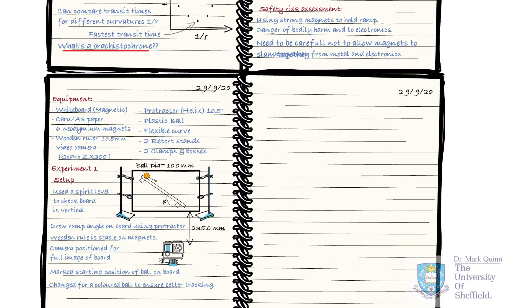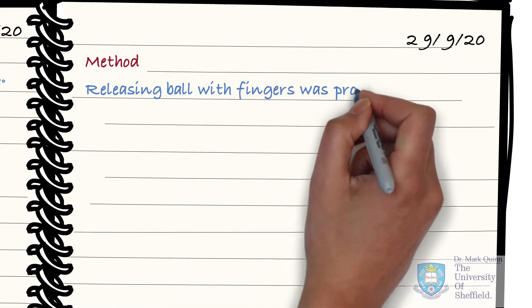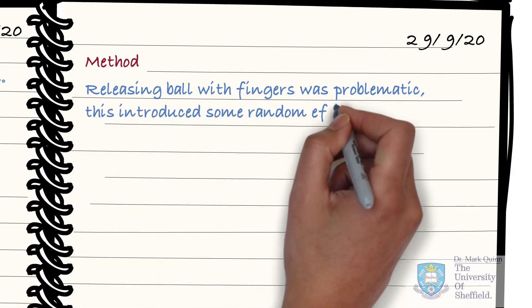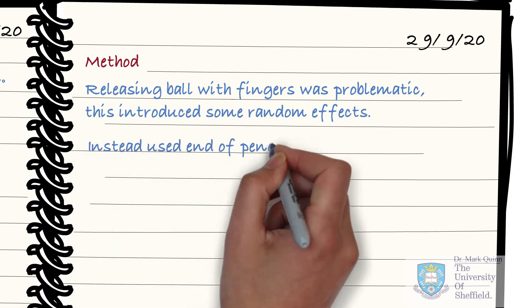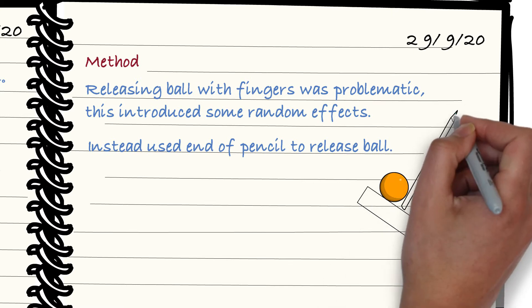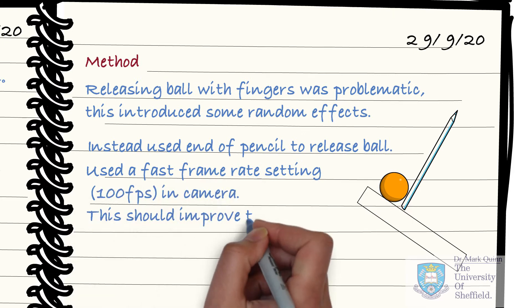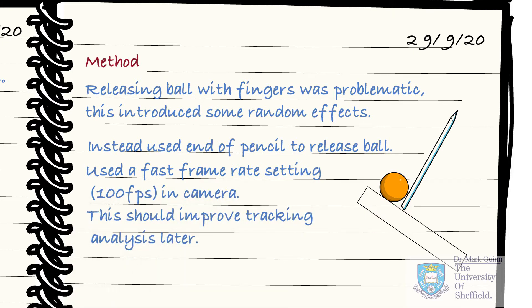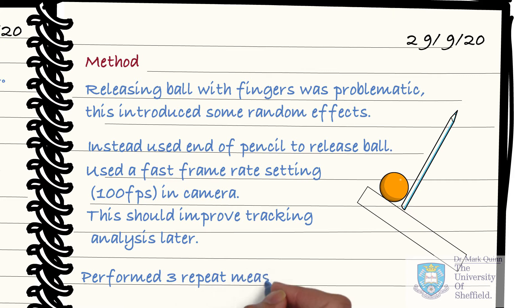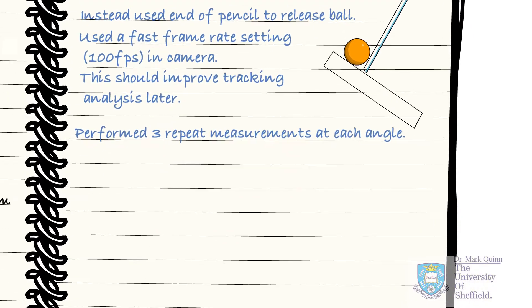After setup is finalised, you are ready to start taking data — that is, performing measurements. By this point, you will have solved any problems relating to the setup. Running the experiment brings its own challenges. For example, you may have discovered that releasing the ball in a reproducible way is needed, or that a diagnostic setting needs to be tweaked. Once ready and all initial problems are solved, you should start to record the datasets multiple times in order to generate the statistics you need. The more repeats, the better you can estimate these statistical errors.